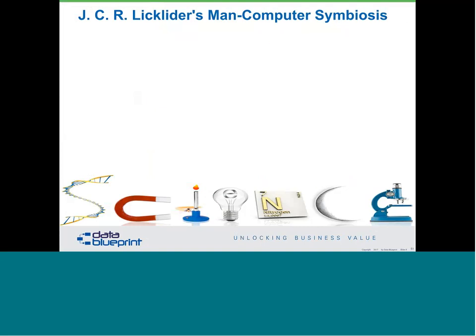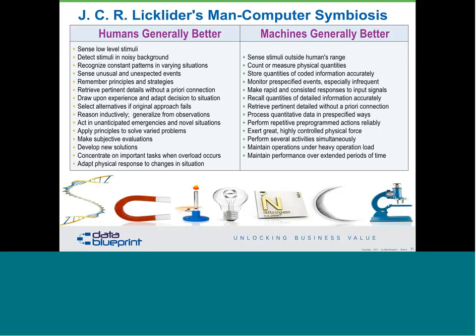I'm going to drop us back to a couple of really interesting insights that one of my heroes, J.C.R. Licklider, put together. This was done in the late 1950s. He said, what are humans good at? He listed a bunch of things. And what are machines good at? He listed a bunch of things. It turns out this taxonomy has held up for a long time. His observation was that the best approaches are going to be the right combination of human and automated methods. The proper balance between those two is really what we strive for at Data Blueprint to help our customers know where they should apply data techniques and where they shouldn't.